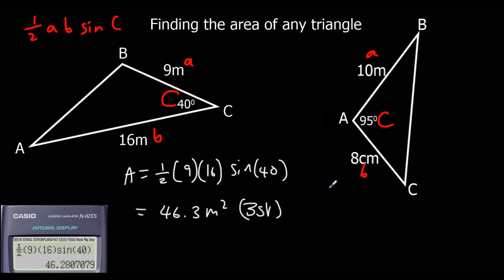Same again here. So we're going to do area is half times 10 times 8 sin 95. And then we type that into the calculator.